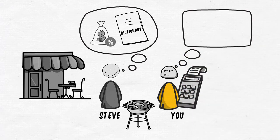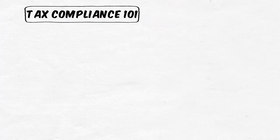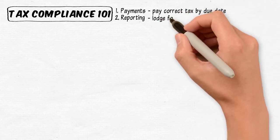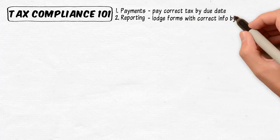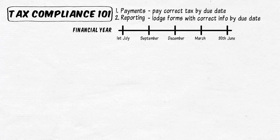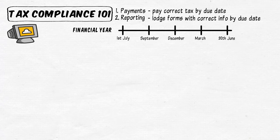And you go, 'All right Steve, you want a five-minute snapshot of tax compliance? Here we go.' So Steve, the first thing you need to understand about tax compliance is that it is made up of two things: payments and reporting. Payments is about paying the right amount of tax to the government by the due date. Reporting is about lodging the right forms with the right numbers by the right due date. The typical financial year starts on 1 July and ends on 30 June. There are five or six different types of tax compliance obligations like income tax, GST, payroll tax, etc. It might seem like a lot of work, but if you invest in good cloud software with automation, most of the hard work is already taken care of.